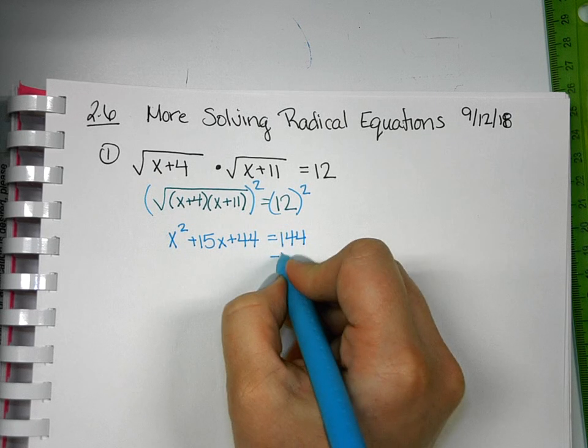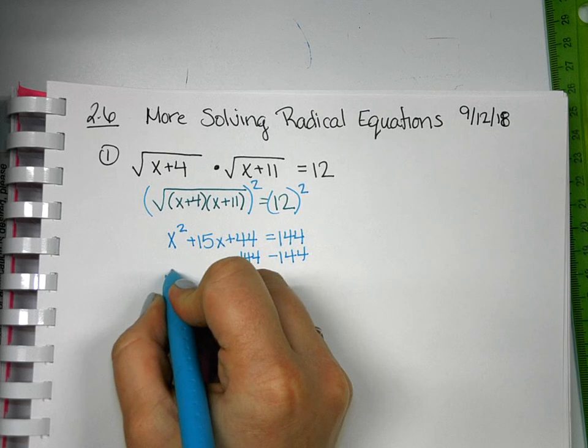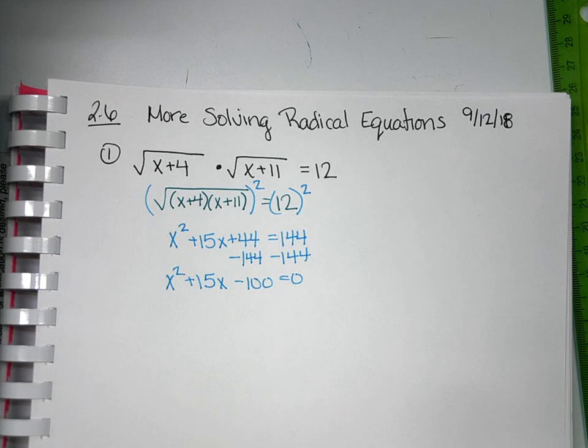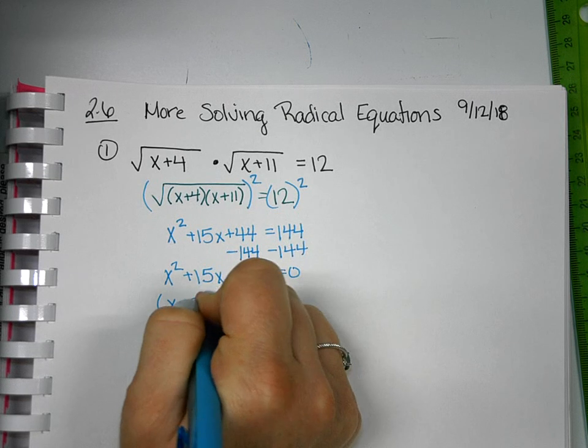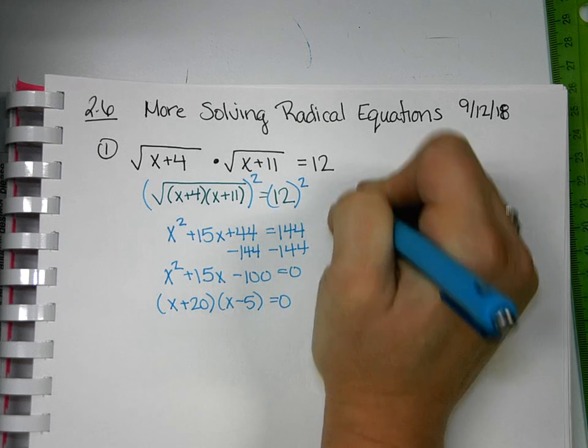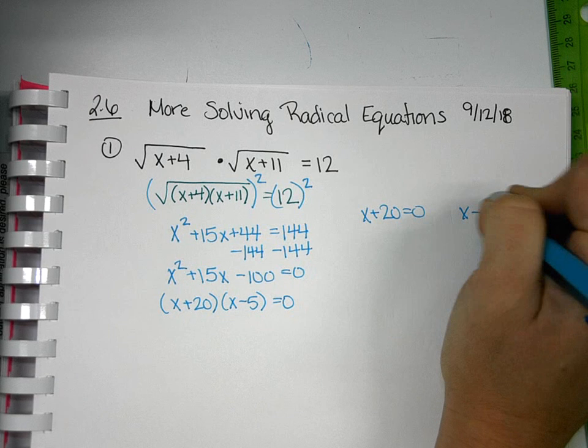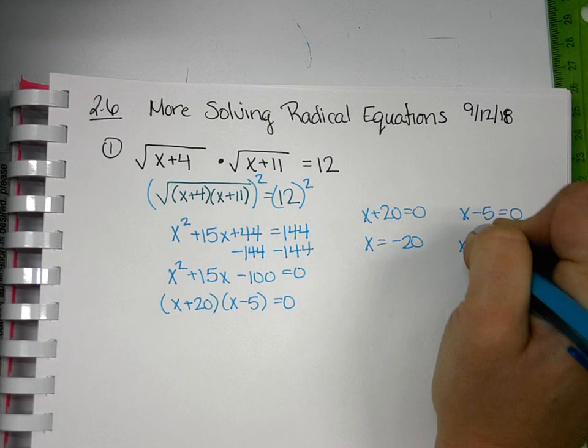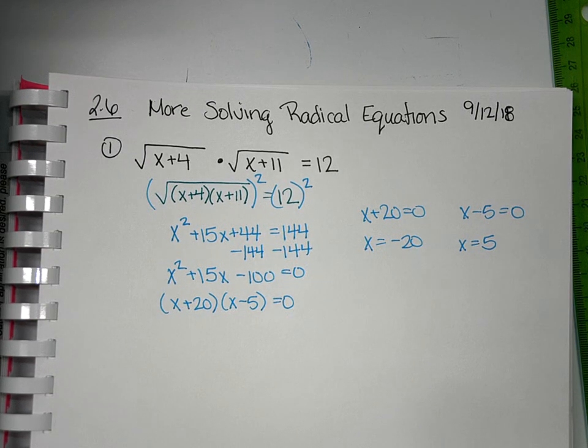So I can solve for x squared plus 15x plus 44 equals 144. Now I can solve for x by moving 144 to both sides, and we'll have minus 100. So when we factor, we get x plus 20 times x minus 5. Just like before, we need to go back and check our solutions.